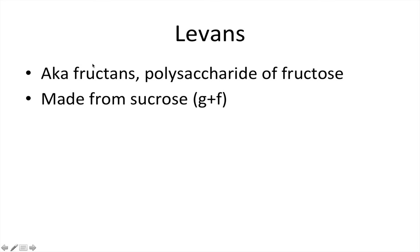Levans, also known as fructans, has the same synthesis deal as dextrans. It's a polymer made of fructose, but it's synthesized from sucrose — you cut it in half, take the fructose, and the fructose gets distributed into levans.